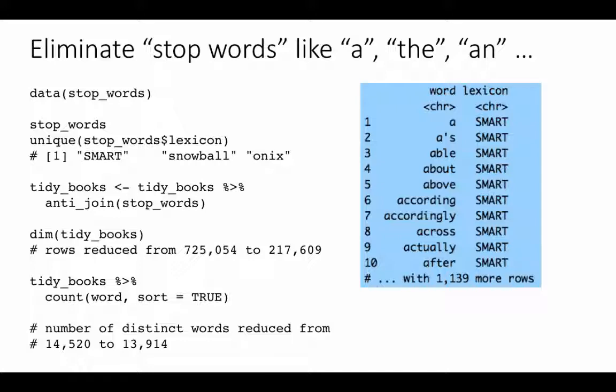So now that we have the data in this nice form with one row per token of our analysis, which is per unit of analysis, which is word for us, we've got one row for that. Now we are in a position to do all kinds of analysis very easily.